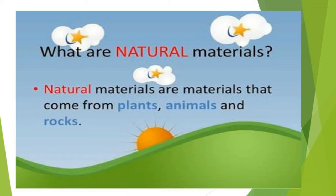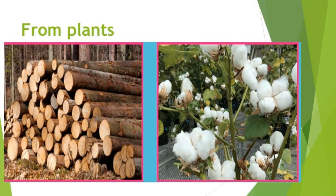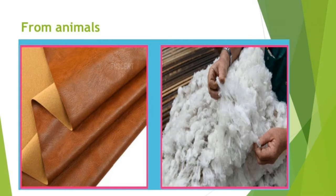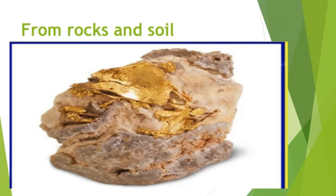The sources of natural materials are plants, animals, rocks and soil. From plants, we get logs, cotton, and coconut fibre. From animals, we get leather, wool, etc. From rocks and soil, we get metal ores.